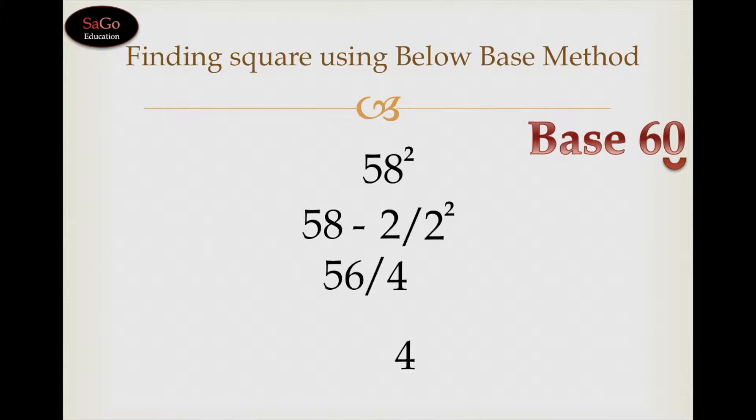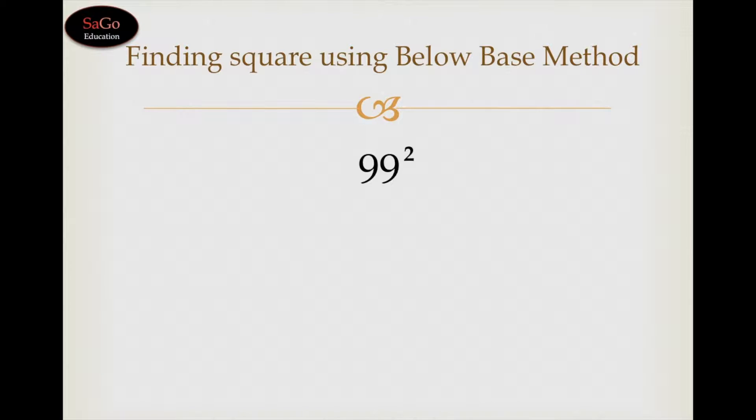So we would directly write 4 as it is, and 56 would be multiplied by 6 because we are considering the base 60 here. 56 multiplied by 6 is 336. Our answer is 3364.